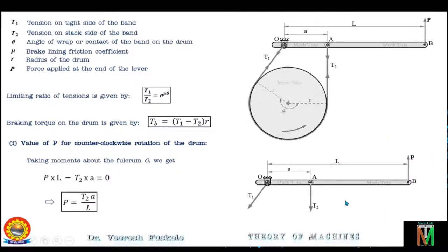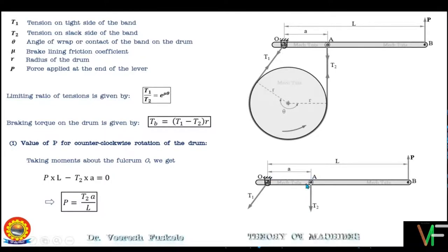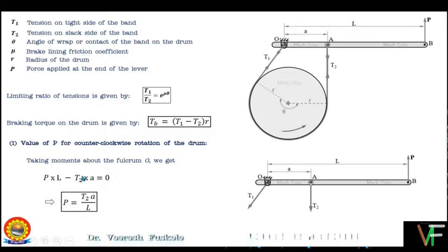Force P will again have a positive anticlockwise moment of magnitude P × L, where L is the perpendicular distance of the line of action of force P from the fulcrum. Tension T2, as shown in the figure, tends to rotate the lever in the clockwise direction, so its moment will be negative with magnitude T2 × A, where A is the distance between point A and O. Since force T1 passes through the fulcrum point, its moment will be zero. So the moment equation is PL − T2·A = 0, giving P = T2·A / L.